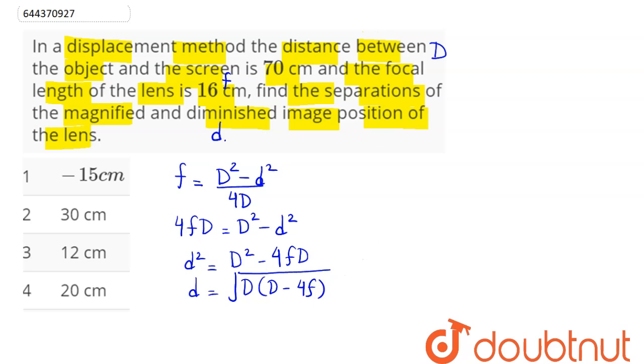Now substituting the values, small d comes as: capital D is given to be 70 centimeters, so this is 70 × (70 - 4 × 16), hence this comes